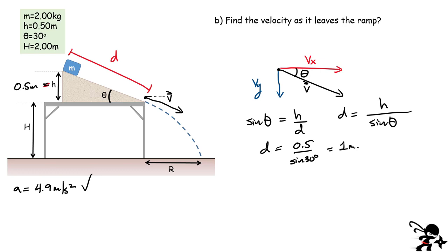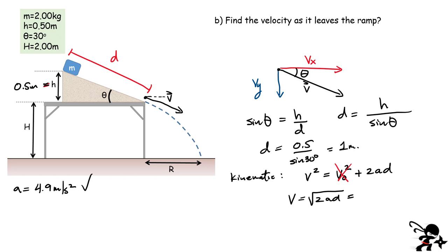Now, how fast is the block moving when it leaves the ramp? We use the kinematic equation: v² = v₀² + 2·a·D. The block is released from rest, so v₀ = 0. Taking the square root: v = √(2·a·D) = √(2 × 4.9 × 1). Substituting these values, the speed of the block works out to approximately 3.13 meters per second.